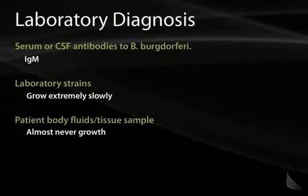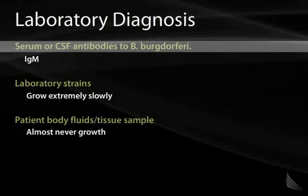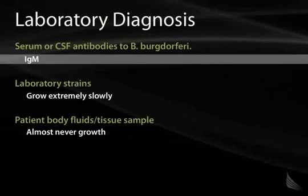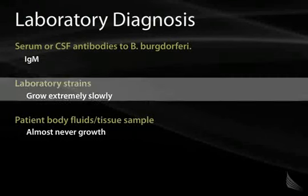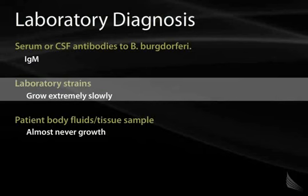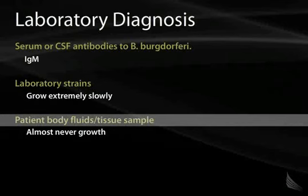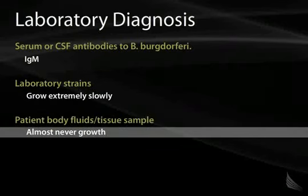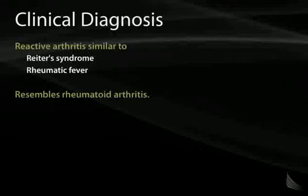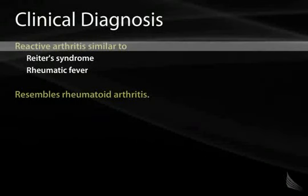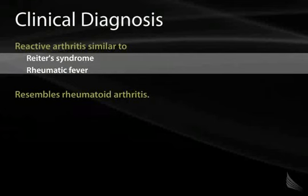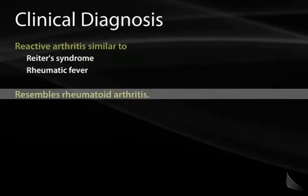Lab diagnosis for Lyme disease often depends on serum or CSF antibodies to Borrelia burgdorferi; IgM is particularly helpful for recent onset disease. Lab strains grow extremely slowly so culture is not practical. Diagnosis is often clinical. Lyme disease can produce a reactive arthritis similar to Reiter's syndrome or rheumatic fever, and often resembles rheumatoid arthritis.